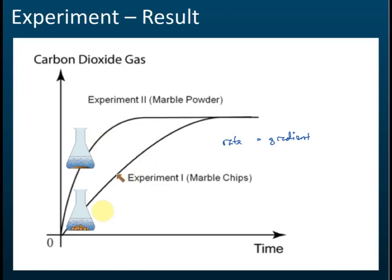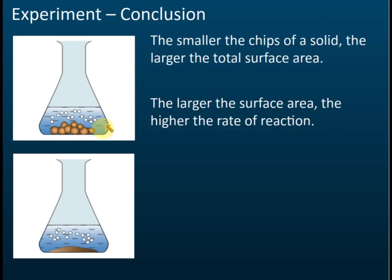Using marble chips gives a lower rate, while marble powder gives a higher rate. From these experiments we conclude: the smaller the particle size, the bigger the total surface area, and the higher the rate of reaction. The smaller the chips of the solid, the larger the total surface area, and the larger the total surface area, the higher the rate of reaction.